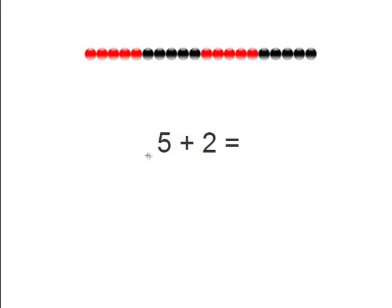So let's try this first problem. 5 plus 2 equals what? So the 5 on the string of beads is up to this point. So now you just have to count 2 more. 5, 6, 7. Therefore, 5 plus 2 equals 7.